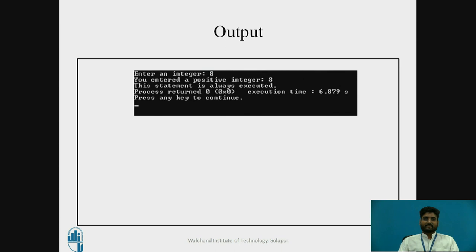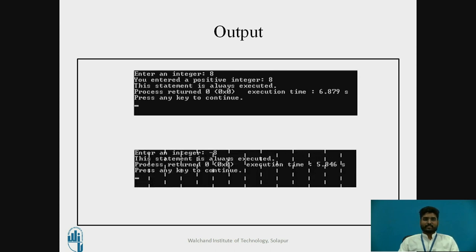Looking at the output: in the first case, the user is asked to enter an integer. I entered 8, and the output is 'you entered a positive integer 8'. The statement 'this statement is always executed' also prints. If I enter a negative integer, say minus 8, the if body — 'your number is a positive integer' — is skipped, and it goes to the next statement which is always executed.